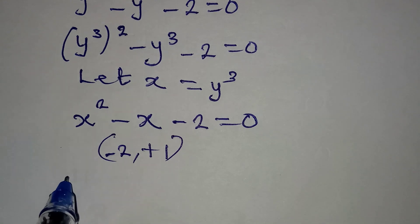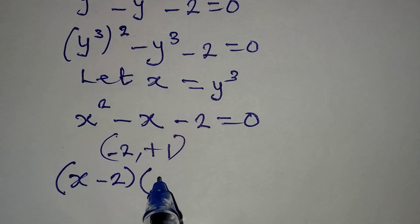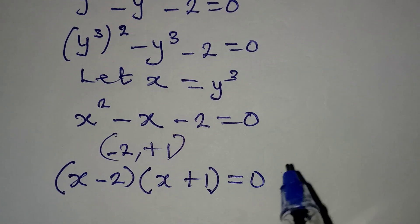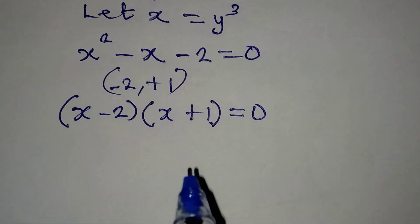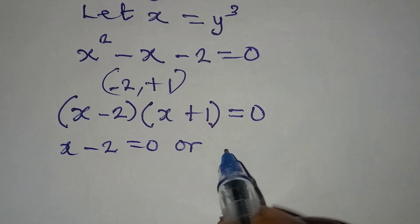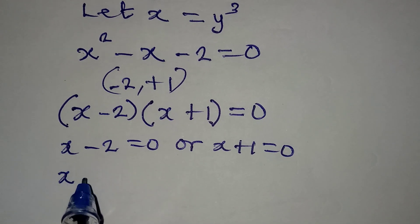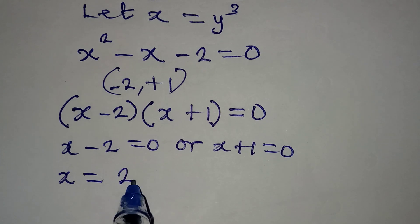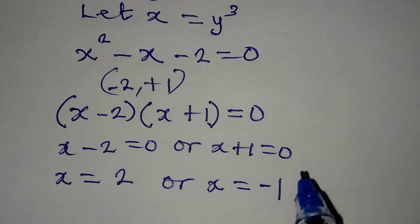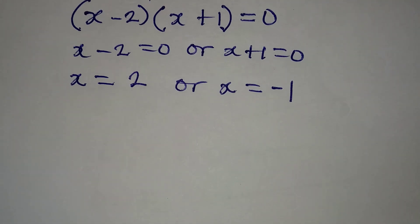In that case, x minus 2 will be one of the factors, and the next factor will be x plus 1, equal to 0. Applying the zero product rule: x minus 2 equals 0 or x plus 1 equals 0. From here, x equals 2, or on the other side, x equals minus 1. But remember we were not looking for the value of x — we are looking for the value of y.